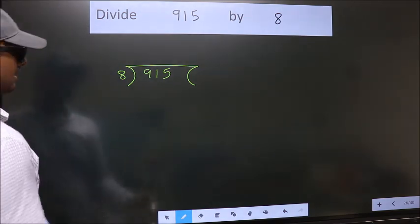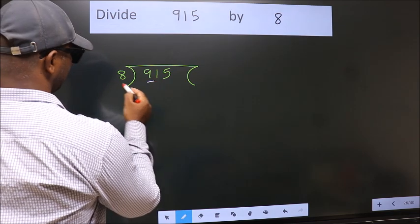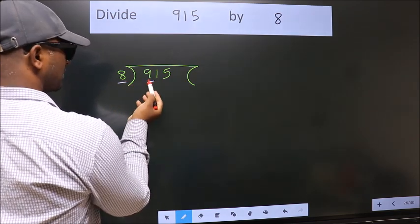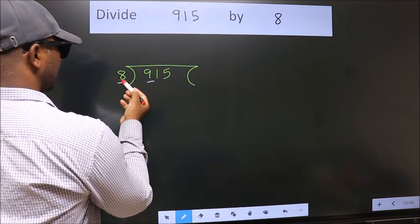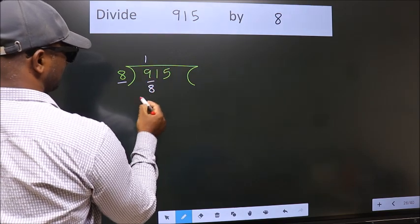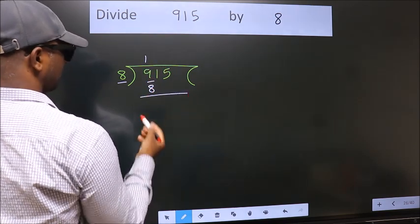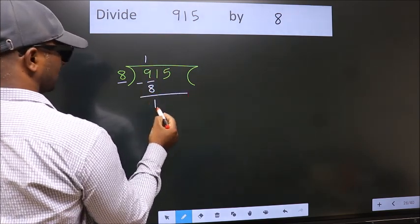Next, here we have 9, here 8. A number close to 9 in the 8 table is 8 once 8. Now we should subtract. We get 1.